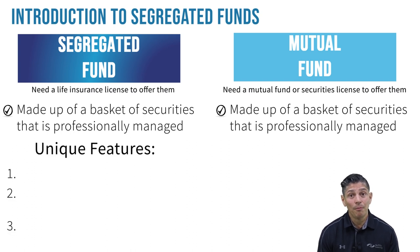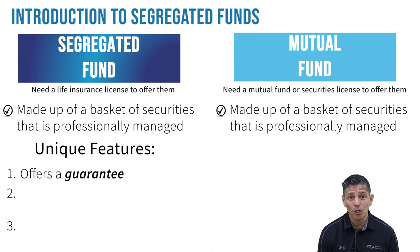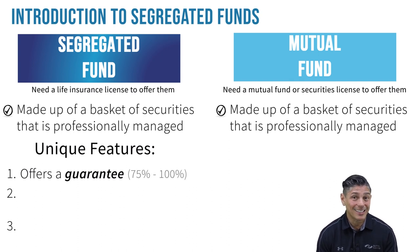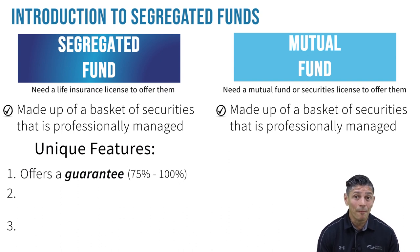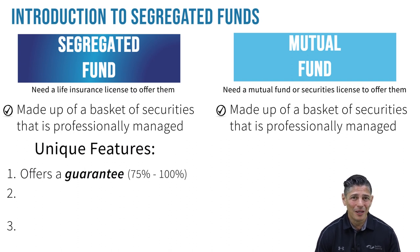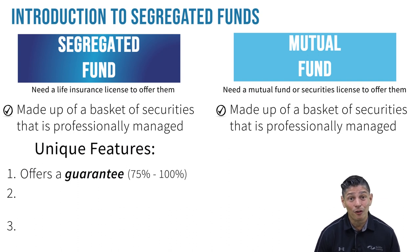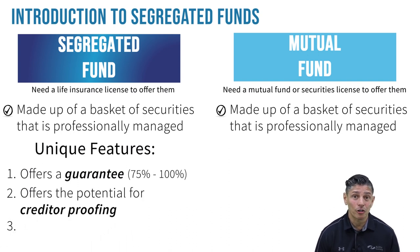However, segregated funds also offer three key features that mutual funds do not. Number one, they offer a guarantee upon the death of the annuitant or upon the contract's expiry date, which is usually ten years. A fund can guarantee as little as the legal minimum of 75% of the initial amount invested, or in some cases as high as 100%. You may be thinking, well, big deal — they're only guaranteeing what I put in — but it's better than losing principal, so in some scenarios it can be meaningful to a particular client.